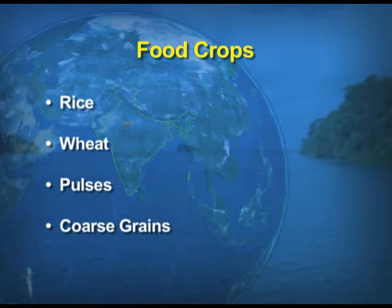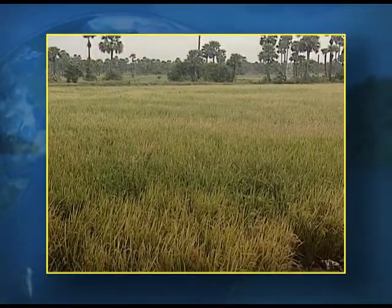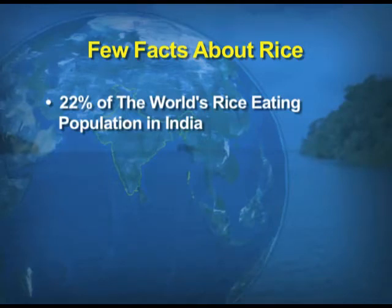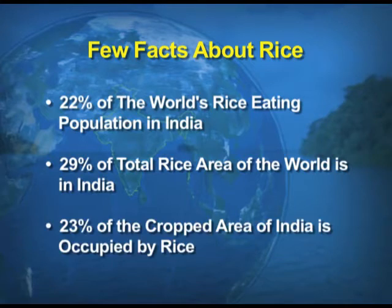Rice is the most important food crop of India, feeding more than half of our population. India is the second largest producer of rice in the world after China. A few interesting facts: 22% of the world's rice-eating population is in India, and 29% of the total rice area of the world is also in India. 23% of the crop area of India is occupied by rice.